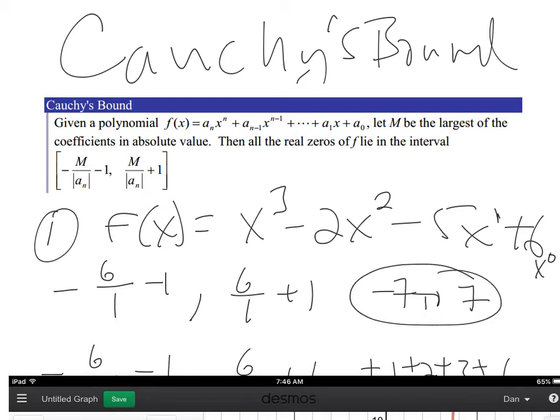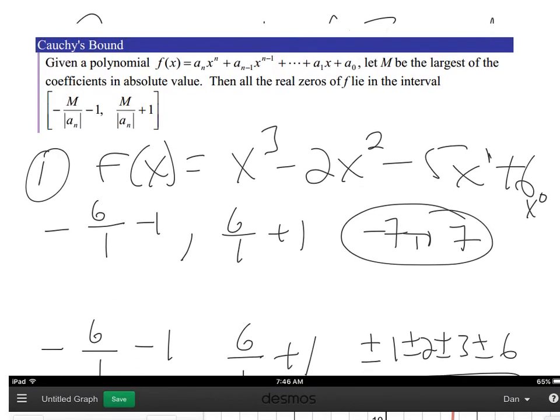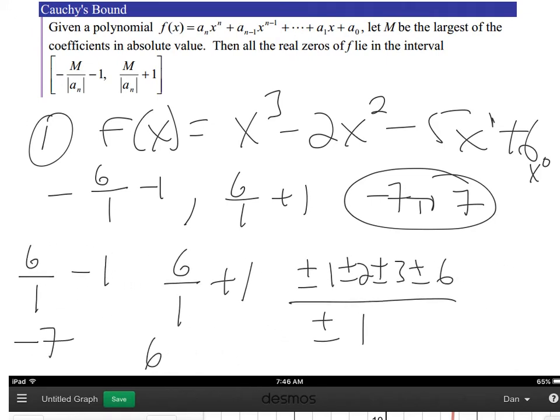When we list for this problem, if we use the rational root theorem, remember, the rational root theorem just says take the last term, that's the P, and the Q is 1, and then you list all the factors of the last term, which is all the factors of 6, and then over all the factors of 1. We see there's no way I'm going to get anything more than negative 6 to 7. So Cauchy's bound didn't really help us eliminate anything there.